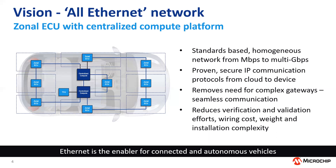The benefits for Ethernet in the vehicle are pretty well documented. Standards-based from multi-bits per second to multi-gig, very much proven and worked for many many years. IP security removes the complex gateways — that's one of the big advantages of having a homogeneous network. And on the wiring side it reduces not just the cost and the weight but also verification, validation, and installation complexities and cost.